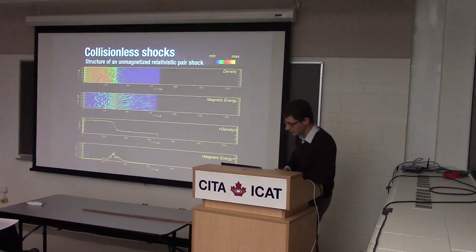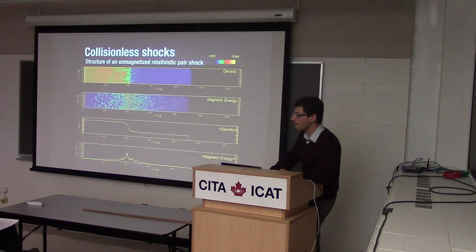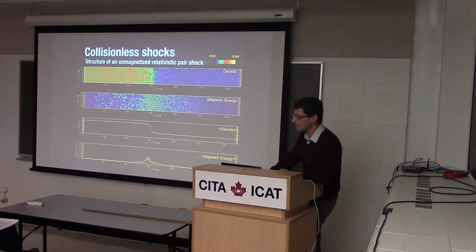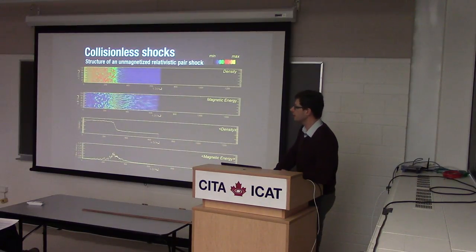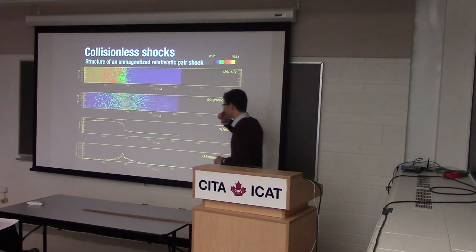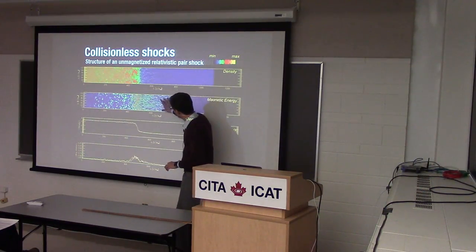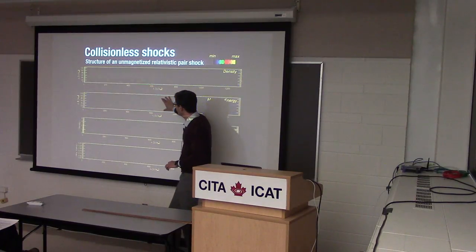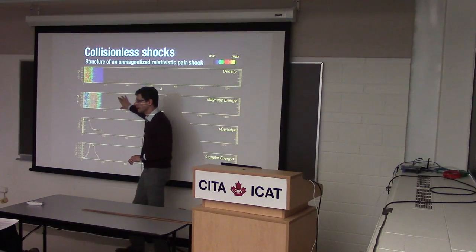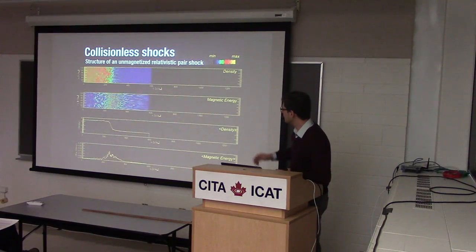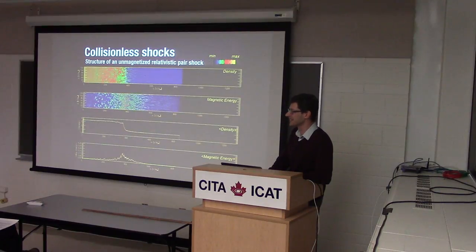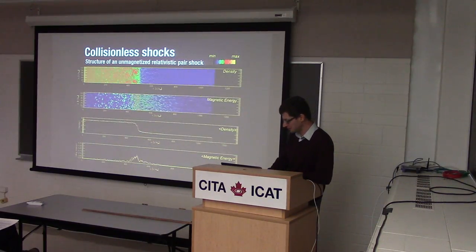In the context of gamma-ray bursts, the way around the field dissipation problem is particle acceleration. If you evolve the simulation for much longer, there will be energetic particles that create fluctuations on larger scales. Those scales are frozen into the plasma and survive longer distances. It's very difficult to simulate but possible, and we have some hints of this.